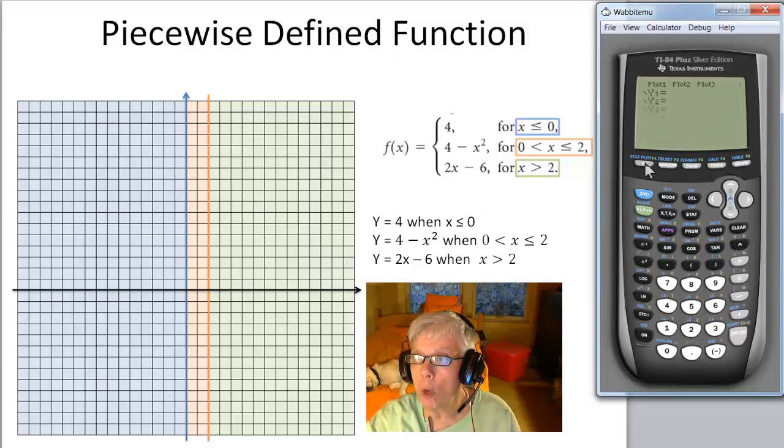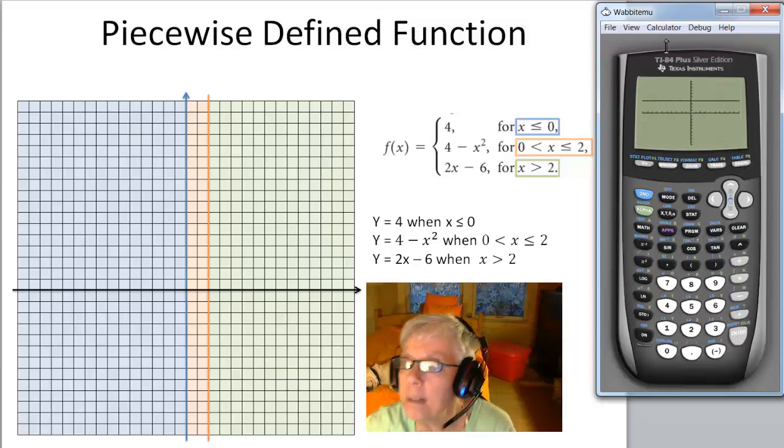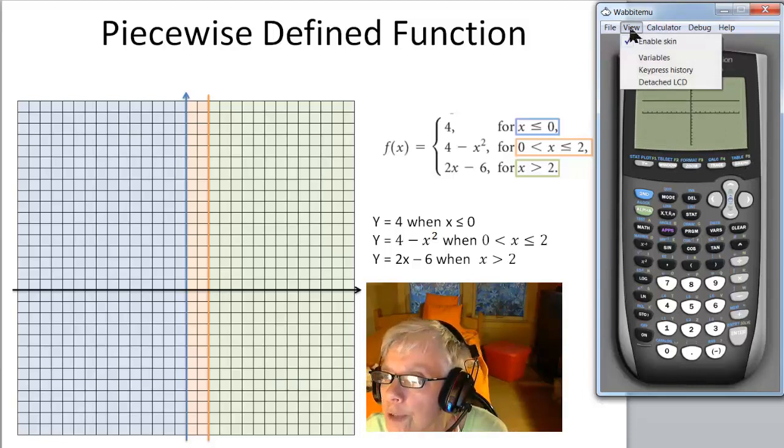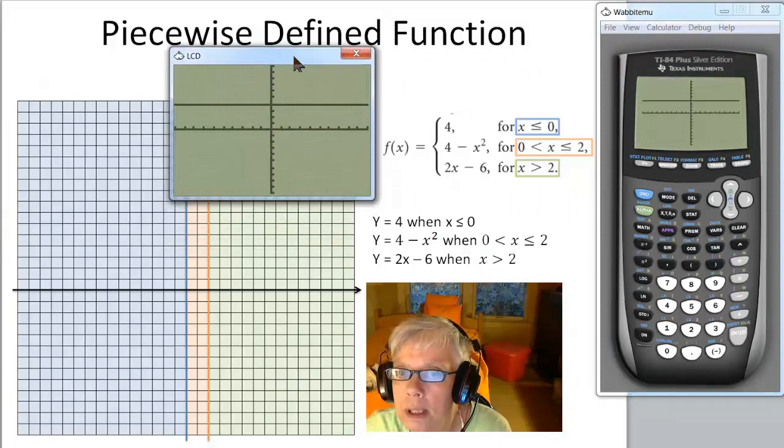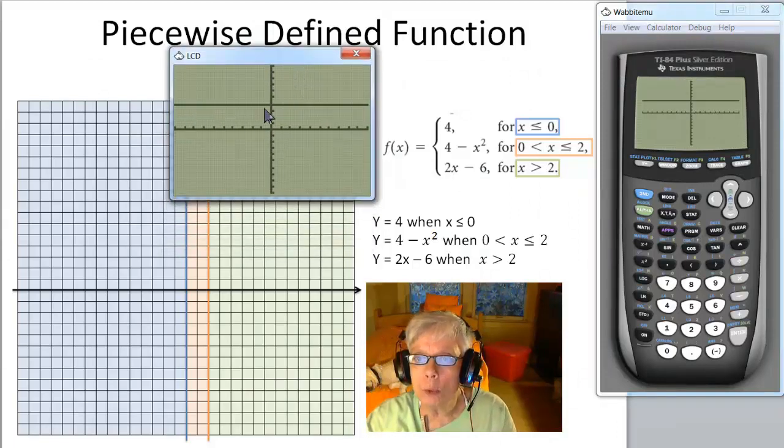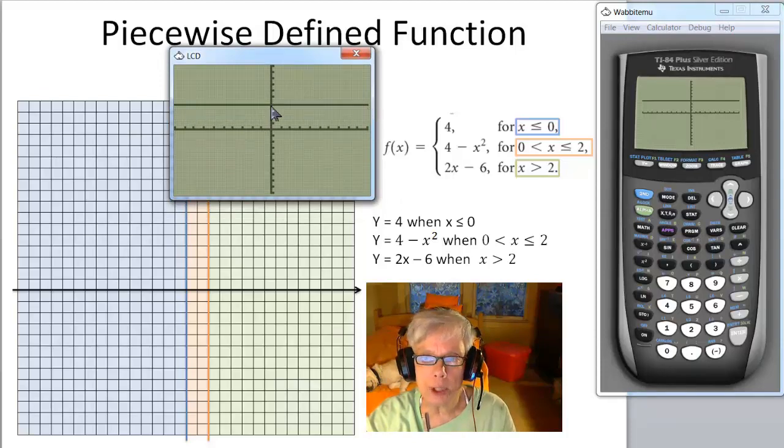I'm going to go to y equals and I'm going to graph y equals 4. I need to make that bigger, don't I? So I'm going to view and detach the LCD. There we go. This is y equals 4, the horizontal line going through y equals 4.